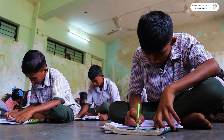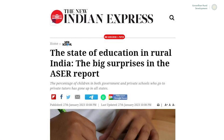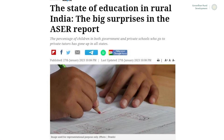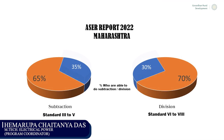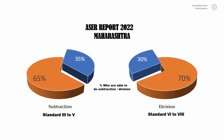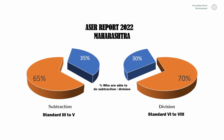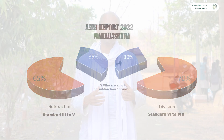Even ninth-standard students cannot identify basic numbers and digits. That is what the result of the ASER test shows us. Based on ASER's survey of Maharashtra, not more than 30% of students can do subtraction or even division.